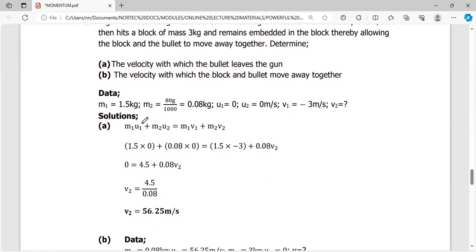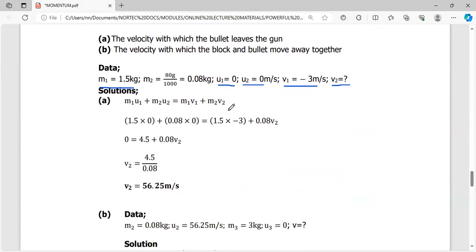Before the gun is fired, its velocity is 0. Before the bullet is fired, its velocity is also 0. The mass of the gun is 1.5 kg. The mass of the bullet, M2, is 80 grams, so 80 divided by 1000 gives 0.08 kg. Recoiling means it's moving in the opposite direction, so V1, the velocity of the gun after firing, is negative 3 m/s. V2, the velocity of the bullet, we don't know.